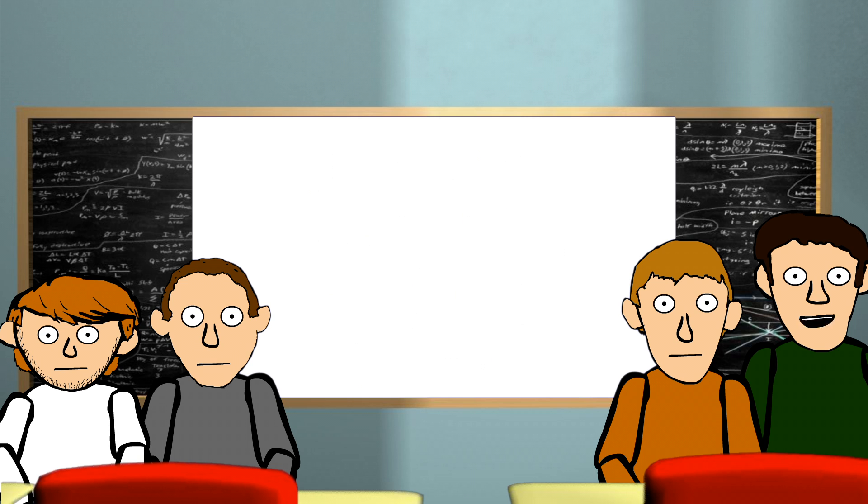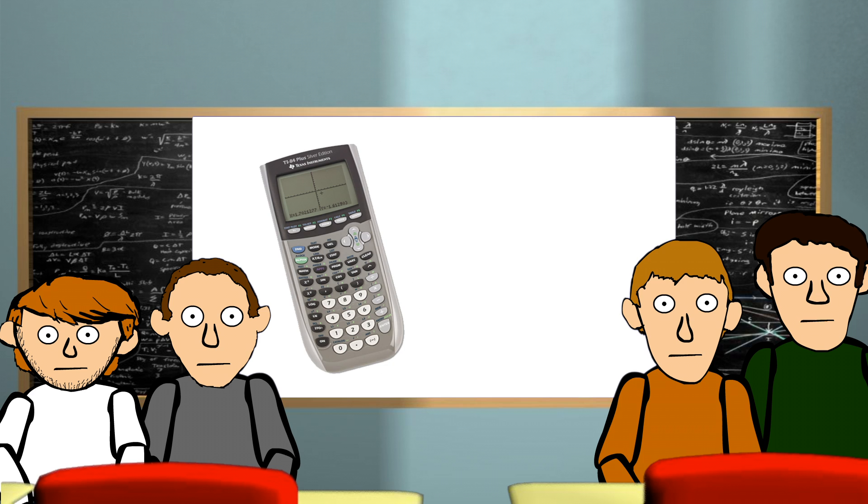This one gets much easier. All you need is a calculator. If it asks for the value rounded to two decimal places, you simply put it in your calculator and round it to two decimal places. That's it. And don't forget to make sure your calculator is in radians.